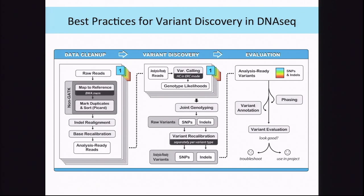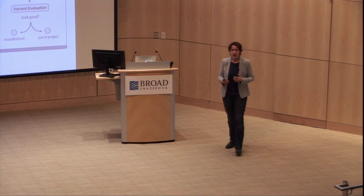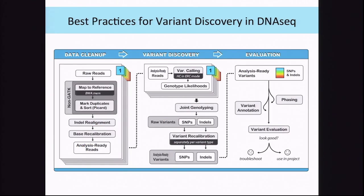The second phase is the variant discovery itself. We have a fairly sophisticated workflow that allows you to very accurately distinguish noise from actual variation. Several speakers — Lewis and Sheila — will speak about this. Then in the third phase, the evaluation part, you have your raw variant calls come out of your variant caller. You still have to do quite a bit of work to refine the variant calls and genotypes, and decide which part you want to keep and which part you want to filter out.